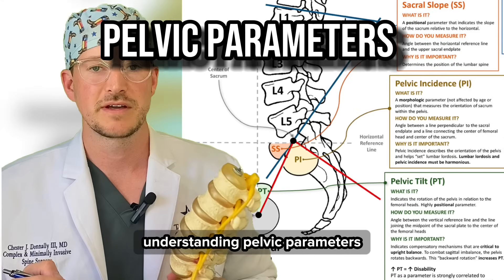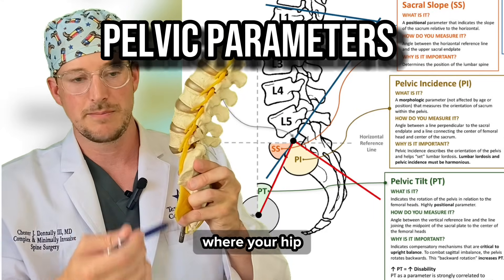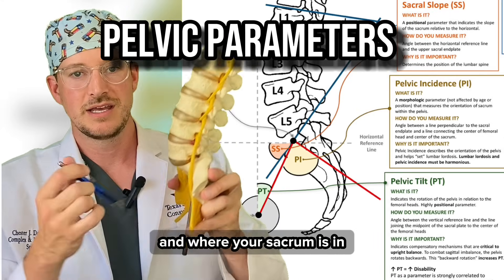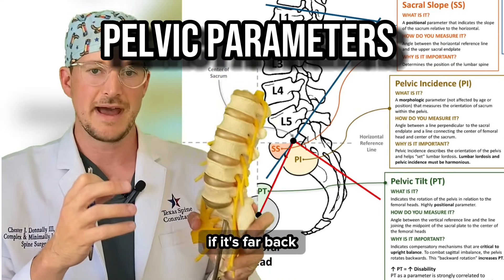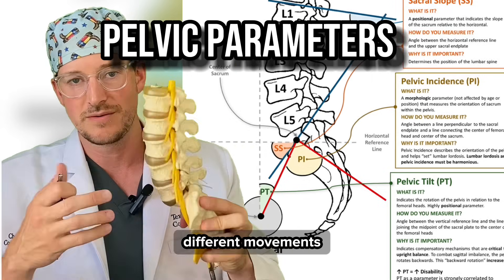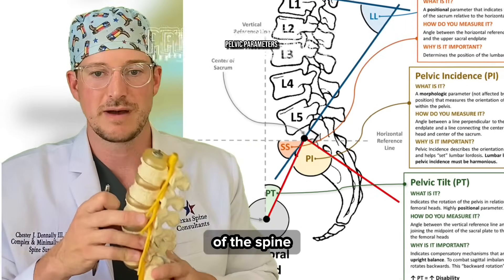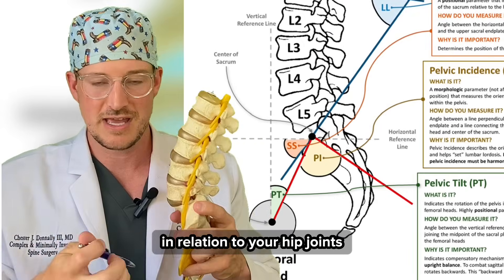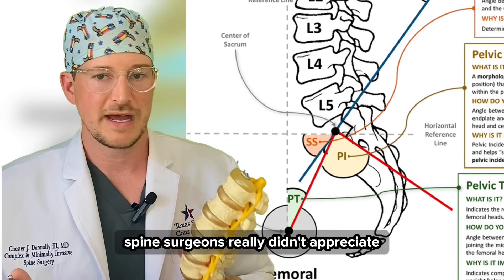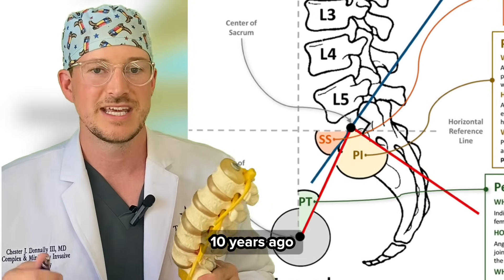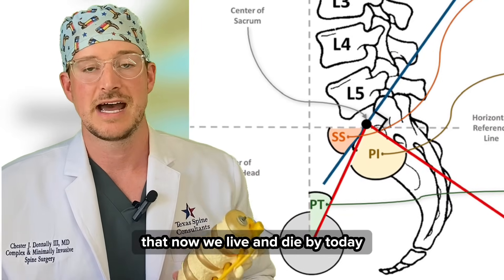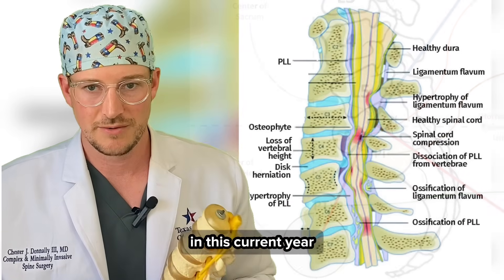Something called sagittal restoration is a very important part — that's pretty much if your spine is collapsing forward, using cages with lordosis that curves it back is a very important part in modern day spine surgery. Understanding pelvic parameters — essentially where your hip and sacrum are in line with each other — different movements of the spine in relation to your hip joints is just a whole philosophy spine surgeons really didn't appreciate 10 years ago that now we live and die by today.